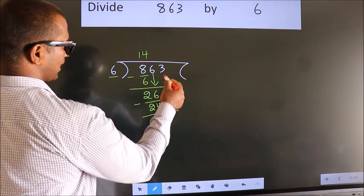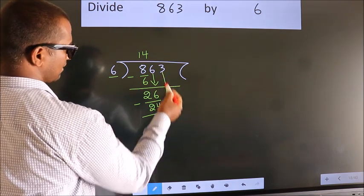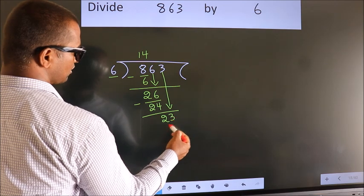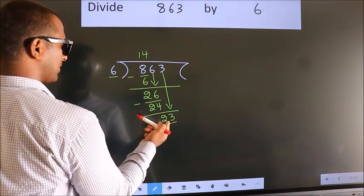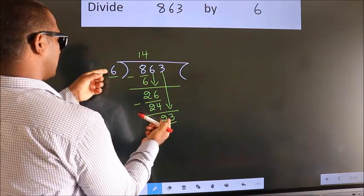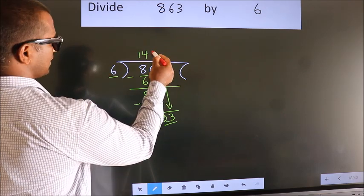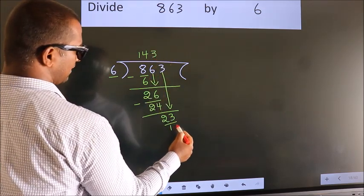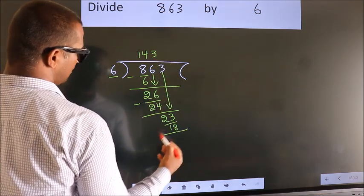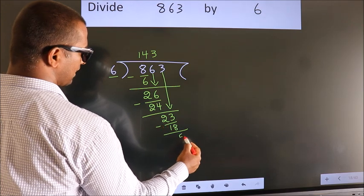After this, bring down the beside number. So 3 down, so 23. A number close to 23 in the 6 table is 6 times 3 equals 18. Now we subtract and get 5.